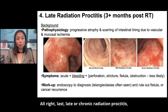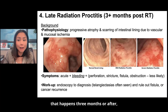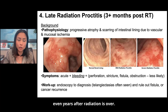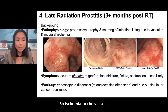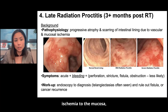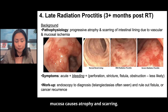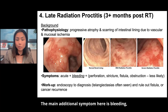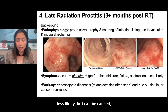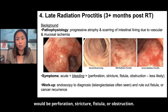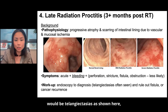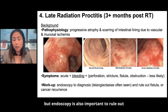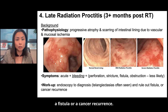Last — late or chronic radiation proctitis. That happens three months or more after radiation, even years after it's over. The pathophysiology here is less inflammation but ischemia — ischemia to the vessels and mucosa causes atrophy and scarring. The main additional symptom is bleeding. Less likely but possible — particularly due to scarring — would be perforation, stricture, fistula, or obstruction. You want to do an endoscopy to diagnose this; the most commonly seen finding would be telangiectasias, and endoscopy is also important to rule out fistula or cancer recurrence.